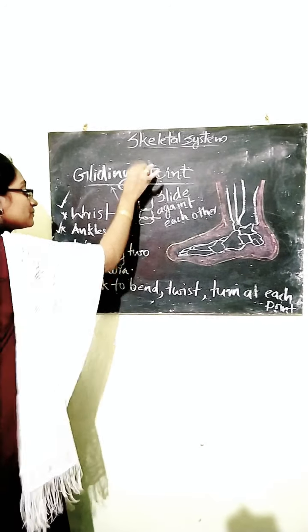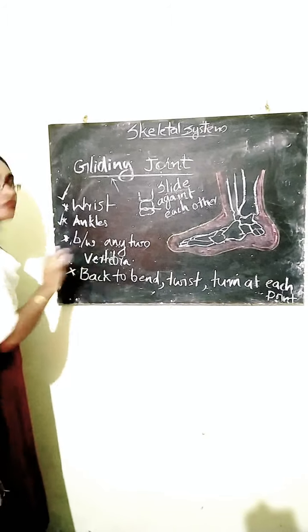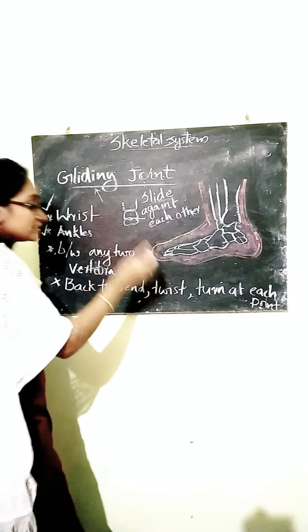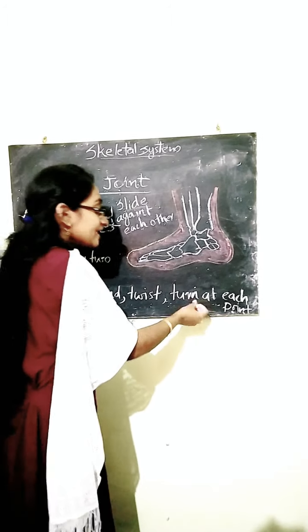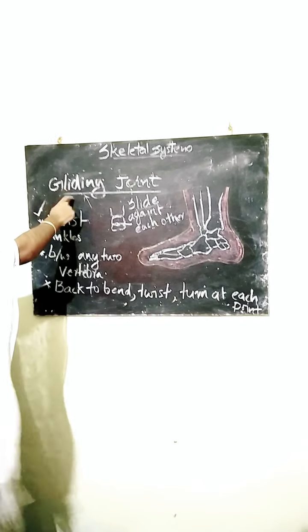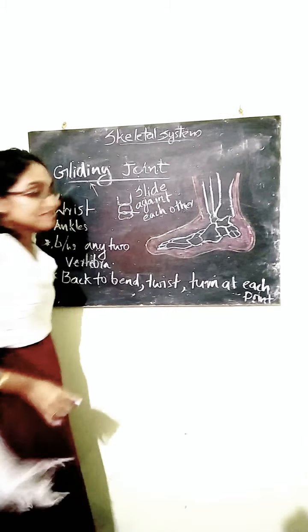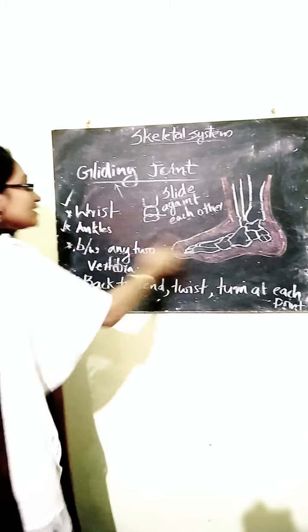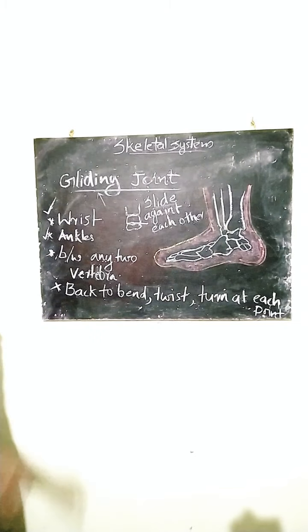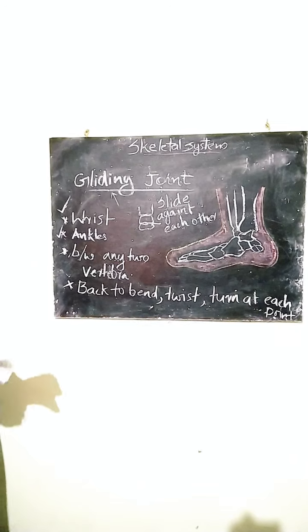We have a number of vertebrae, and this joint is there in between two vertebrae. It can move back to bent, twist, and turn at each point. It is called a gliding joint because it allows bones to slide against each other. We can also see this joint in between the ankle bones.